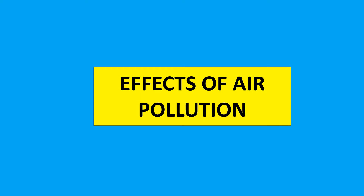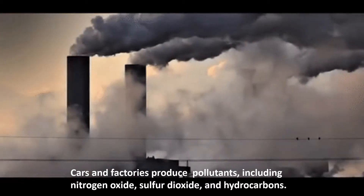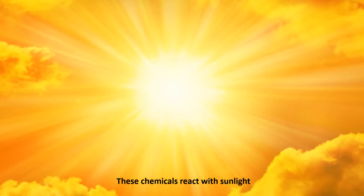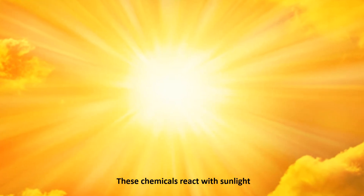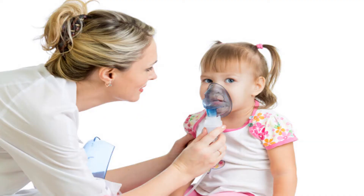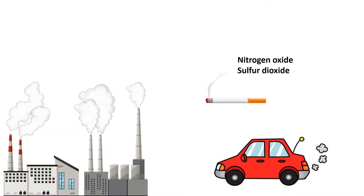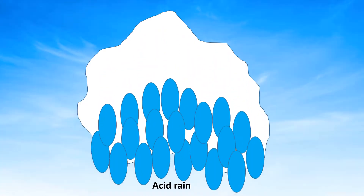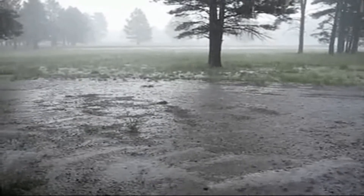Effects of air pollution: Cars and factories produce pollutants including nitrogen oxide, sulfur dioxide, and hydrocarbons. These chemicals react with sunlight to produce smog, a thick fog or haze of air pollution. Smog makes breathing difficult. When air pollutants such as nitrogen oxide and sulfur dioxide mix with moisture, they change into acids and then fall back to earth as acid rain.